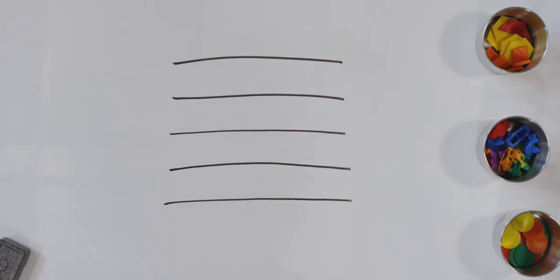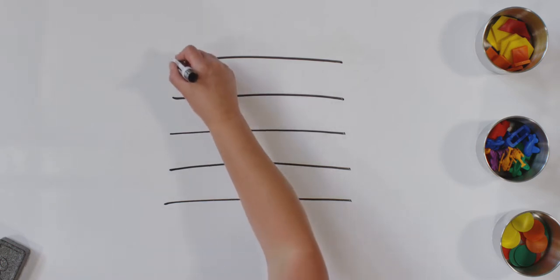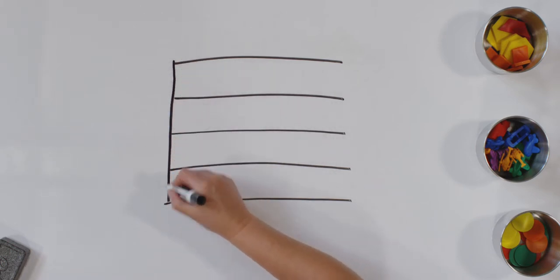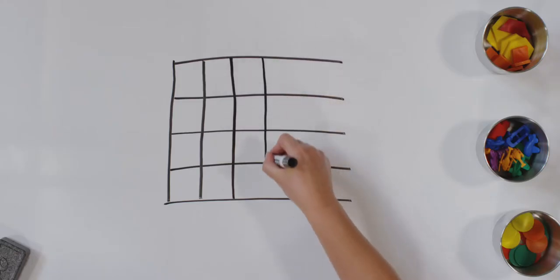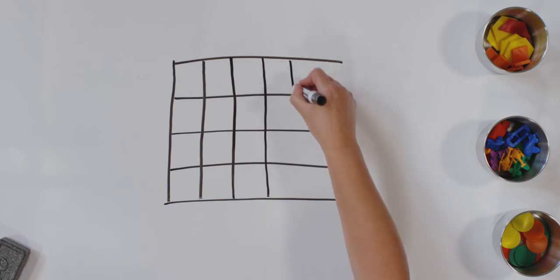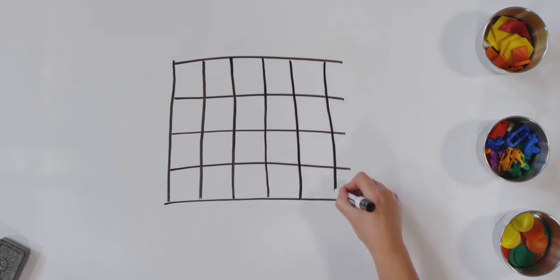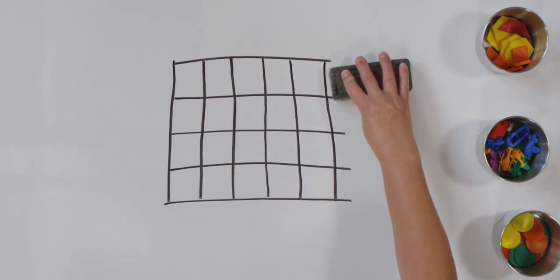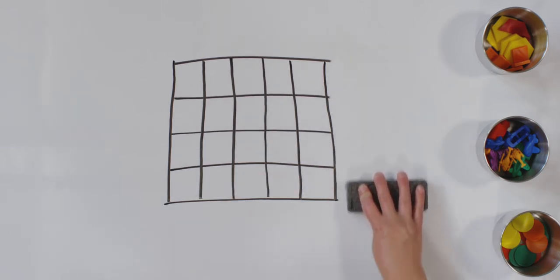Now, let's draw our other lines. Let's make six lines down. One, two. Remember, try to make them evenly spaced. Three, four, five, six. Do you have some extra lines on your graph at home? I do. You can either leave them or if you want, you can erase them. There, we did it.